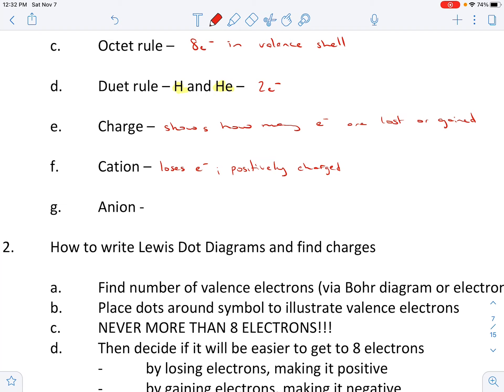Then we have our anion, which gains electrons. And that is our negatively charged. They become negatively charged because we are adding negative charges.